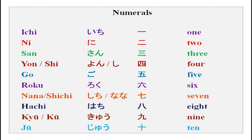There are two expressions. OHAYOU GOZAIMASU — with a rising intonation — means good morning. Any time you meet someone from 6 in the morning till 10 o'clock, you can say OHAYOU GOZAIMASU freely. If you are very informal with the person, OHAYOU will suffice. Then you have KONNICHIWA, which means good day, and you can use it from 10 o'clock onwards till 5 or 6 in the evening just before dark. So: OHAYOU GOZAIMASU and KONNICHIWA.